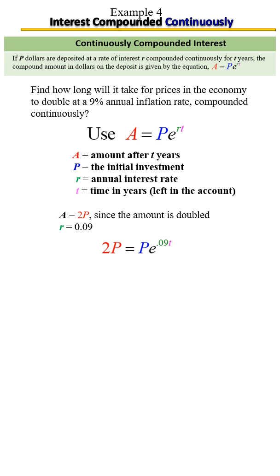Again, we are solving for t, so we've got to peel away at those layers. Step one: get rid of the P. Step two: get rid of the e. Step three: get rid of 0.09.